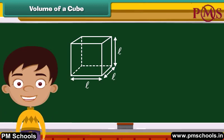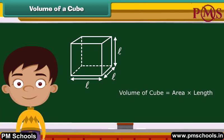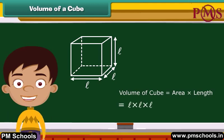To find the volume of the cube, we just need to multiply the area A with L. Hence, by multiplying these three L's together, we get L cubed. Therefore, the formula for the volume of a cube is L cubed.